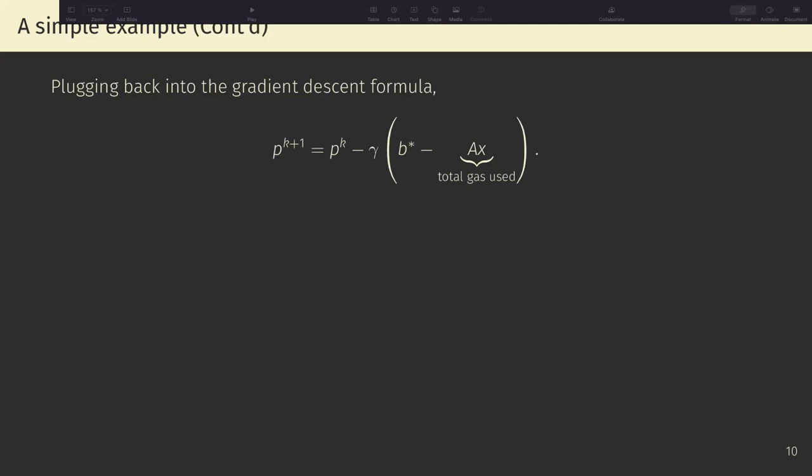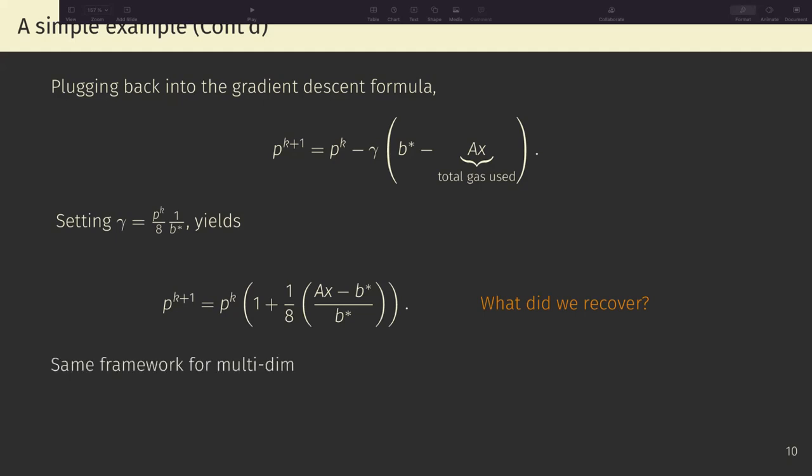Now, it's starting to look a little bit more familiar. Now, what if we set the step size gamma to this arbitrary thing? Well, then we recover something that looks like this. I'm sorry, I don't know how to point on this, but what does this formula look like here? If AX is the total gas used by a given transaction? Well, it's exactly the EIP 1559 mechanism. And one can extend this framework to multiple dimensions or multiple gas lanes or whatever.